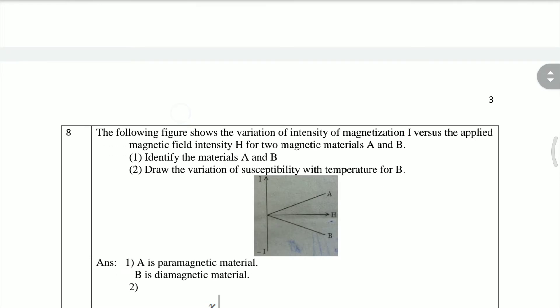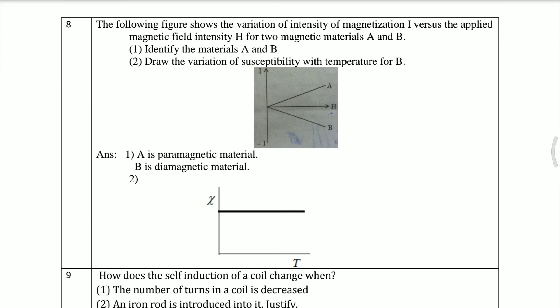Next one: The following figure shows the variation of intensity of magnetization I versus the applied magnetic field intensity H for two magnetic materials A and B. Identify the materials A and B. A is paramagnetic and B is diamagnetic, because here I am showing which direction the force is going.